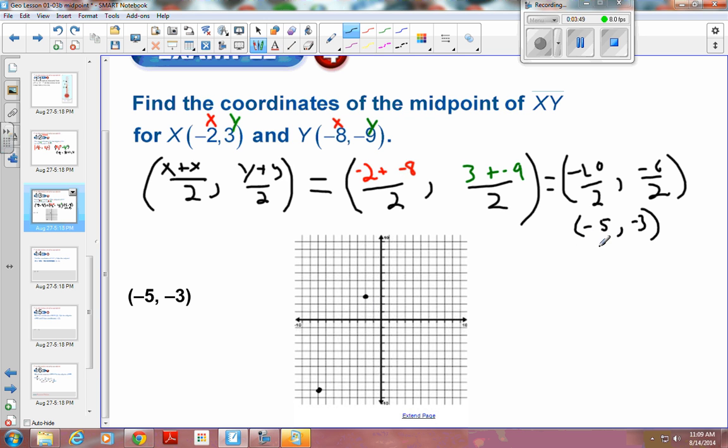And then my midpoint here is negative 5. Let's do that one in red. Negative 5, 1, 2, 3, 4, 5. Negative 3, 1, 2, 3.